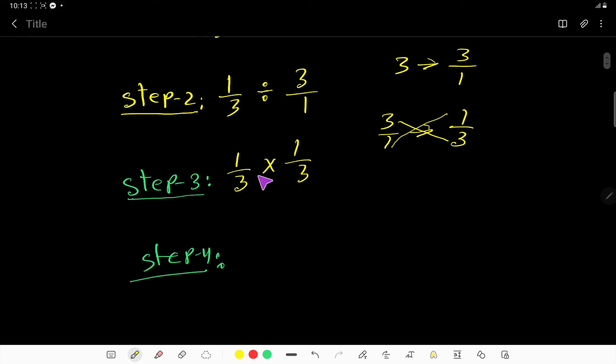In the fourth step, we have to multiply top to top and bottom to bottom. So we are getting 1 over 9, and this is the answer. Thank you.